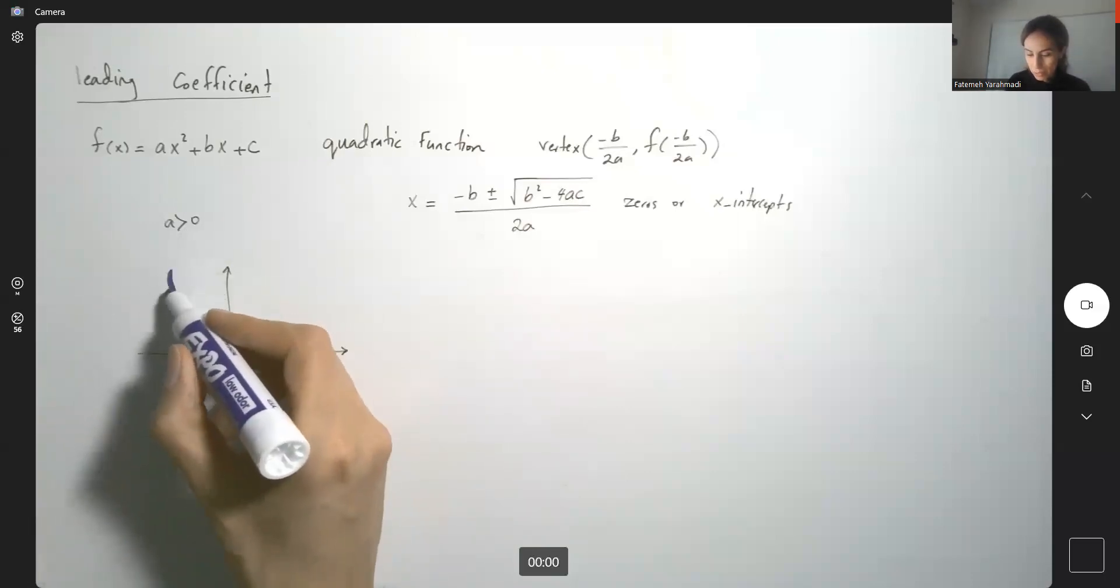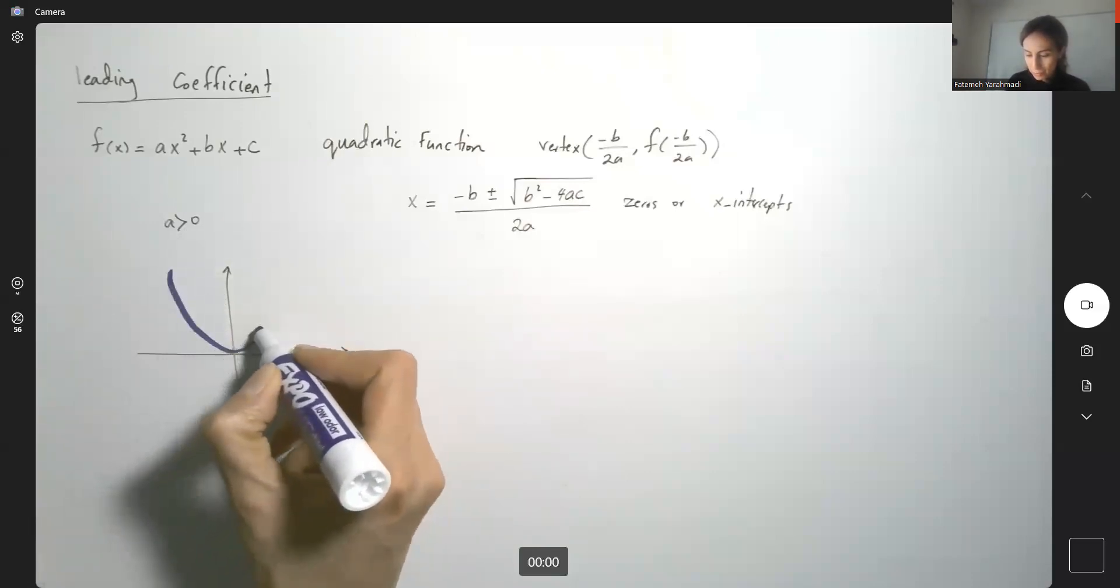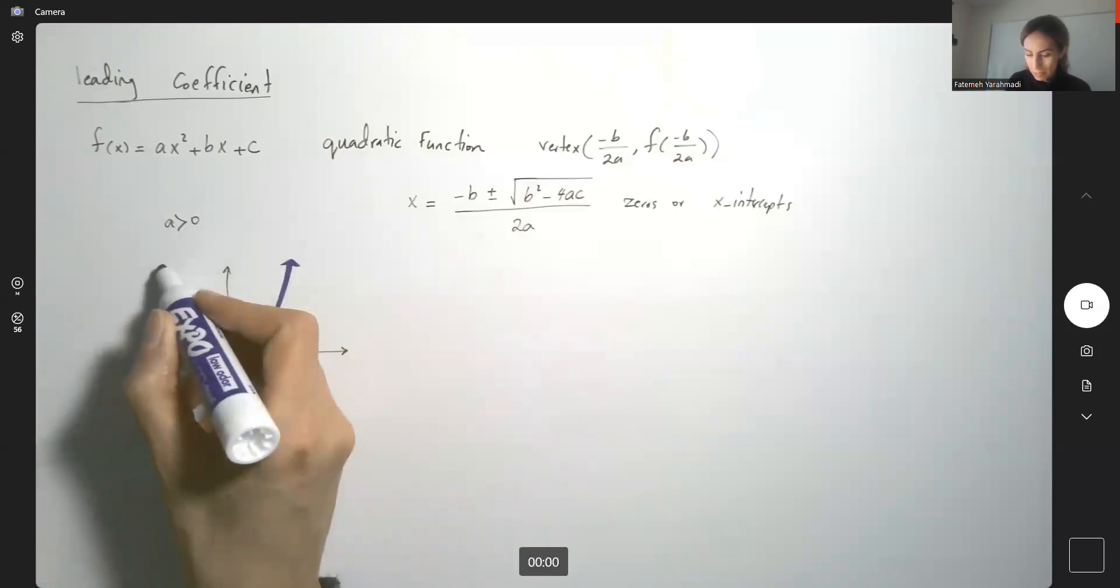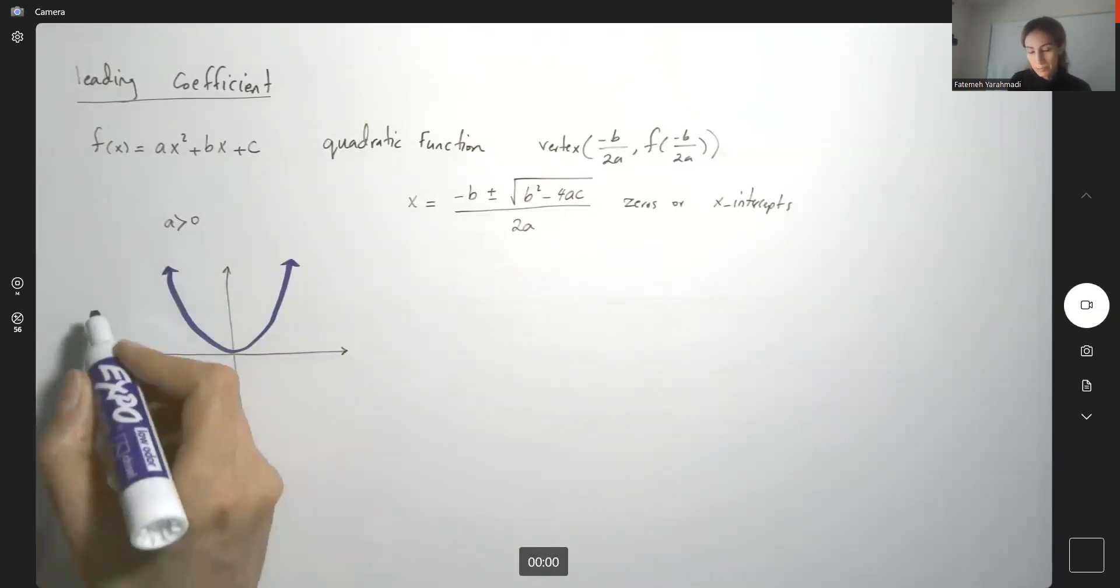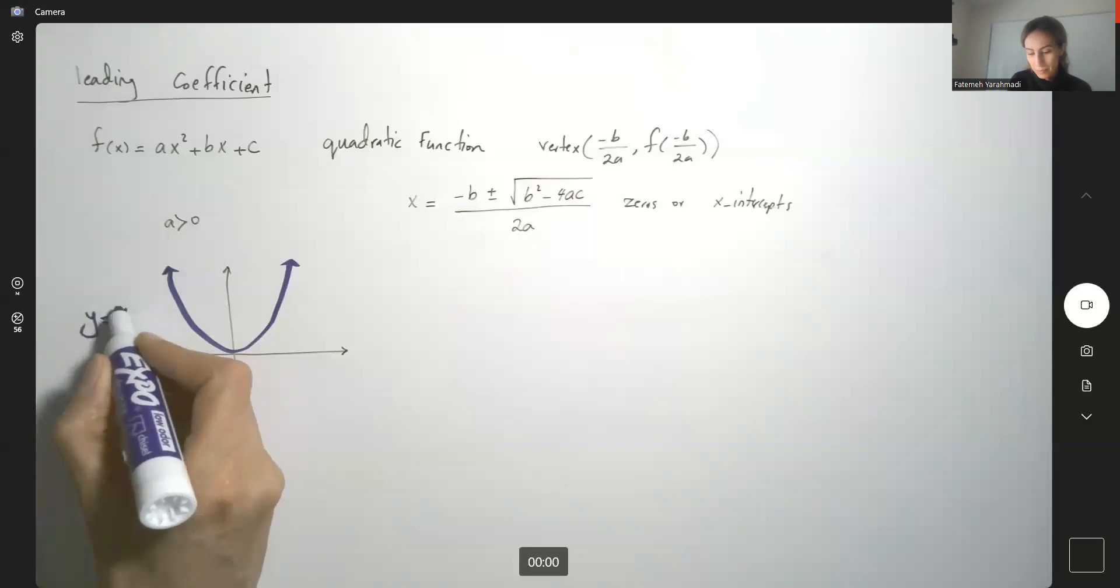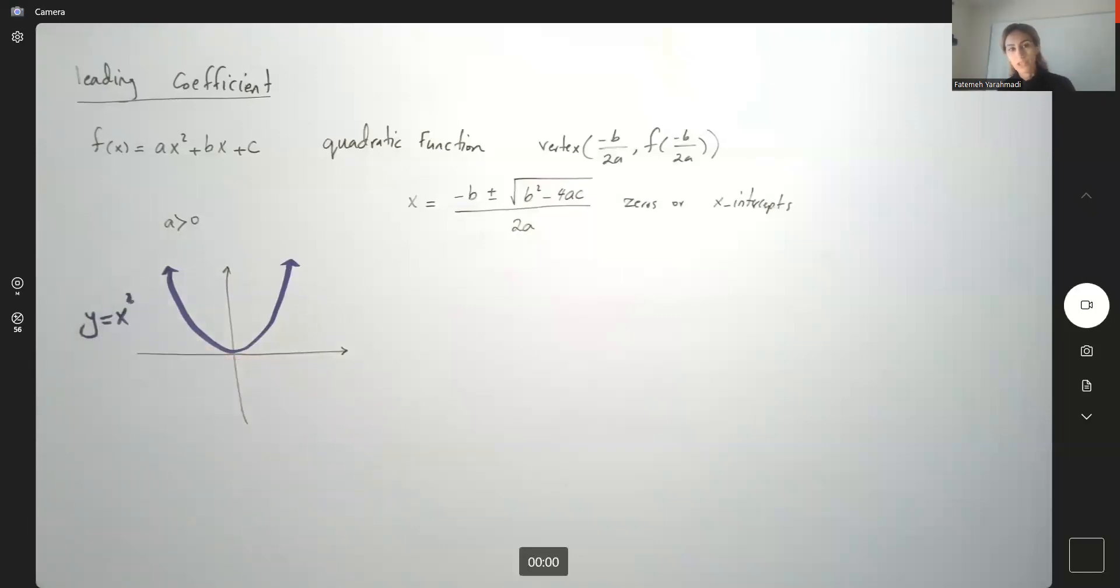Suppose you are working with this function: f of x equals x squared. We have some observations here.